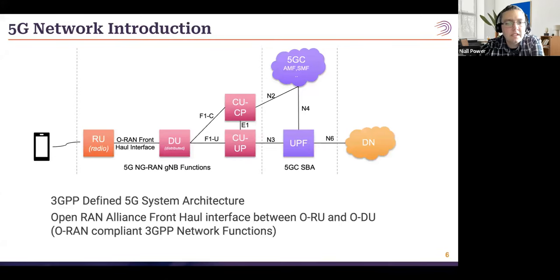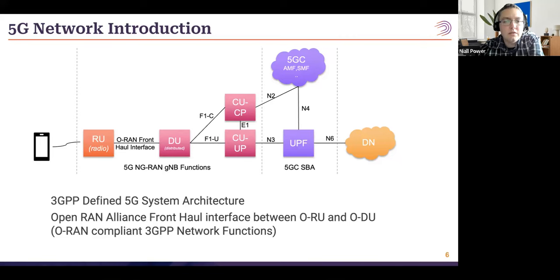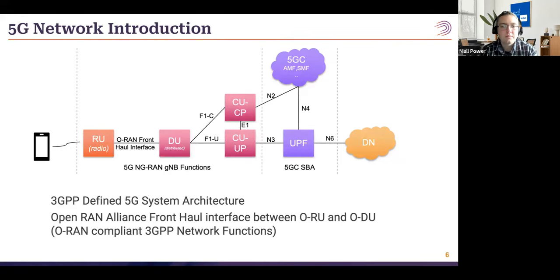This slide shows a simplified view of the 5G network architecture defined by 3GPP, with the fronthaul interface definition from the O-RAN Alliance added. The network is split into two functionalities: a core network, which is a service-based architecture using cloud-native interfaces where DPDK can be used in the user plane function (UPF) for layer 3 packet processing. This requires high throughput, making it ideal for DPDK.